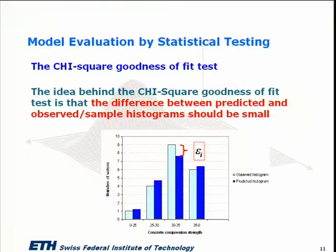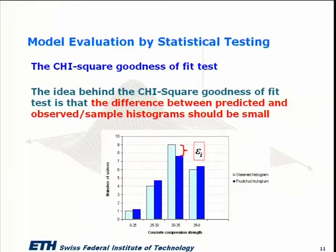We use this sum as a statistic which we can test statistically at a certain level of significance. We would like the sum of all those squared deviations to be small, and if it is small with significance, then we cannot reject our assumed model.